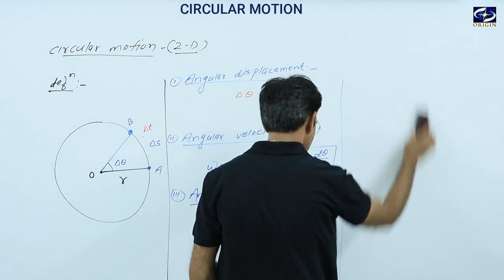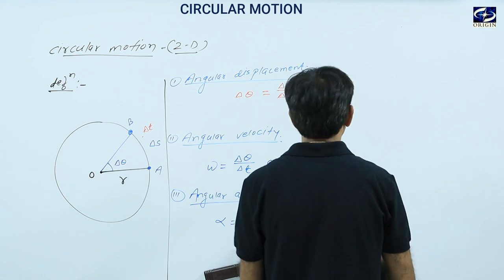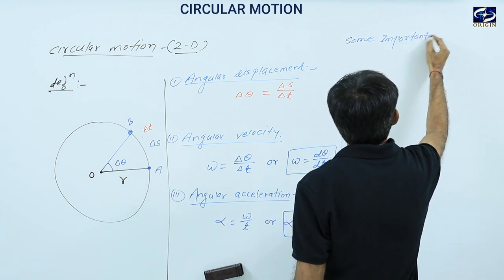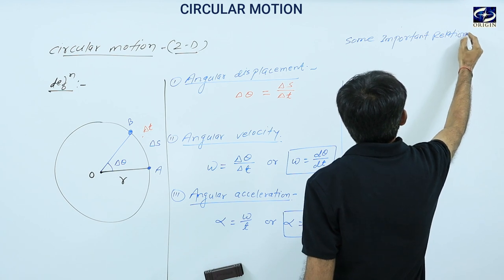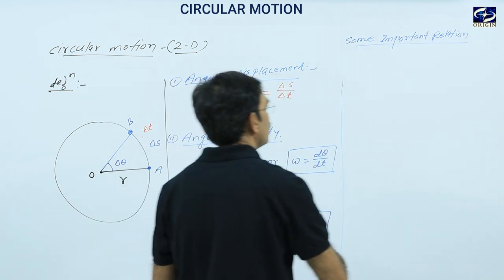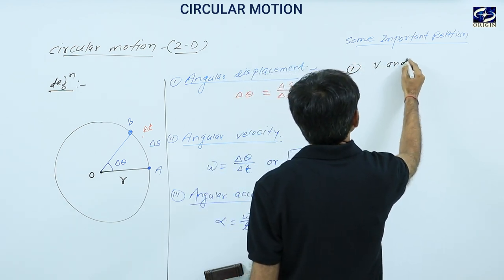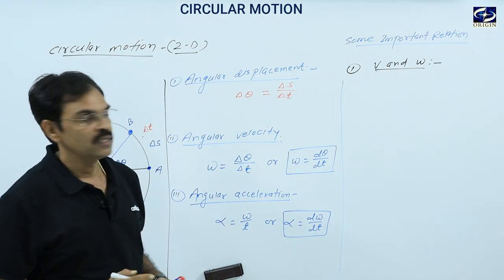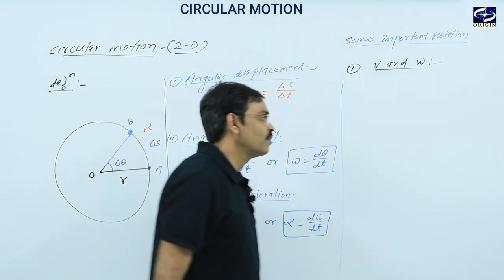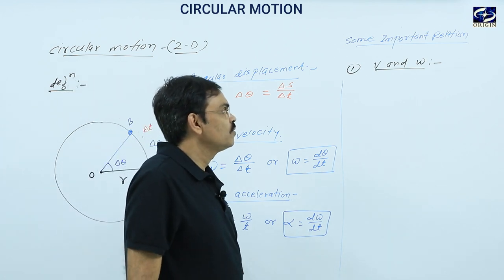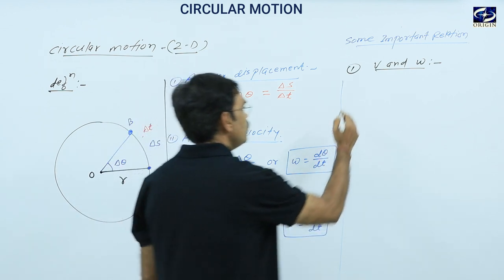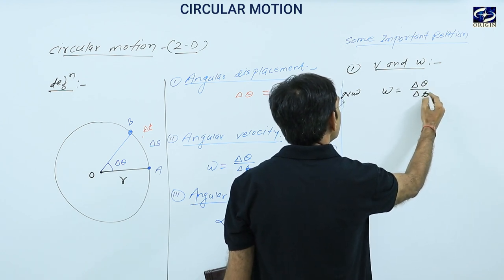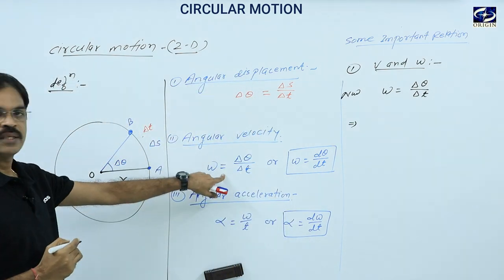Now some important relations. First, the relation between angular velocity and linear velocity, where V is linear velocity and omega is angular velocity. We know that omega equals del theta upon DT. Since del theta equals del S upon R — angle equals arc upon radius — del S is the arc and R is the radius.